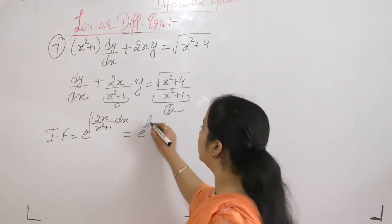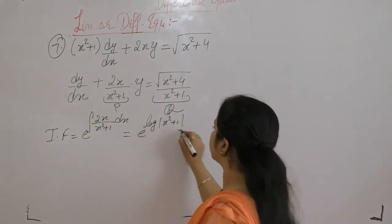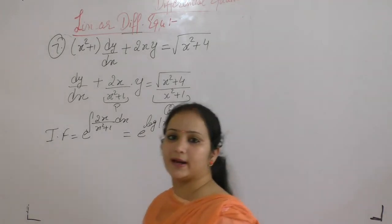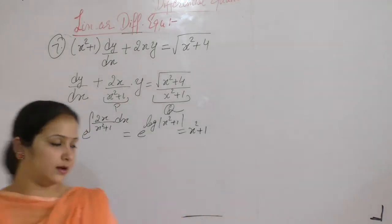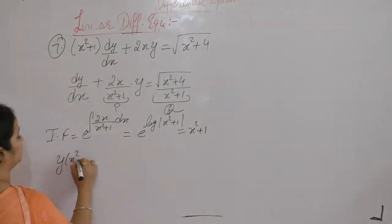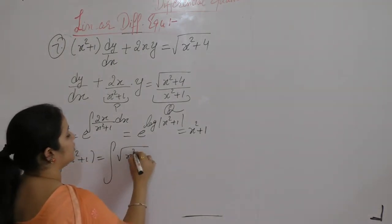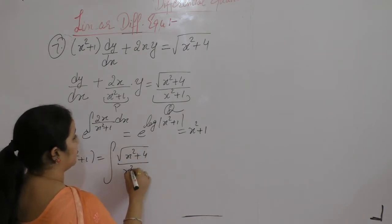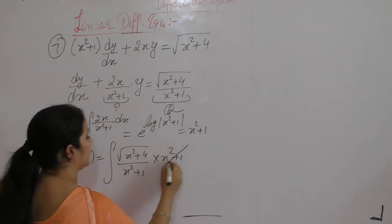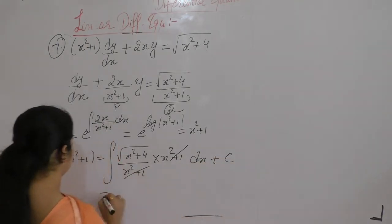That is equals to log of f(x), so we get the integrating factor as x² + 1. Now y into integrating factor is equals to integral of Q multiplied by integrating factor (x² + 1) dx plus c.